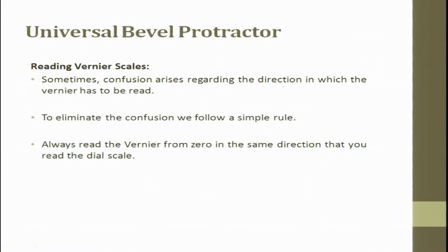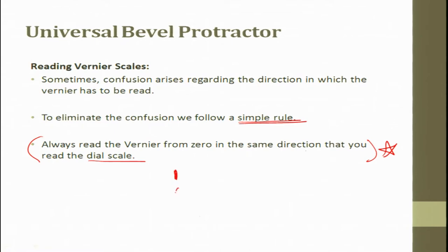Sometimes confusion arises about the direction in which the vernier is to be read. To eliminate the confusion, follow this simple rule: always read the vernier from 0 in the same direction that you read the dial scale. If you follow this rule, there will be no confusion whether it is positive or negative.